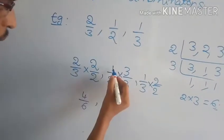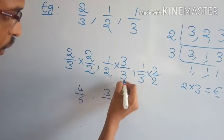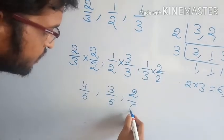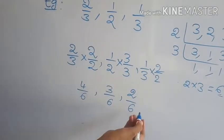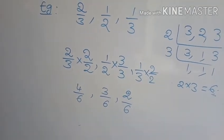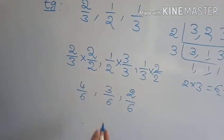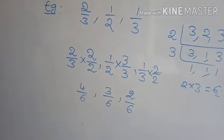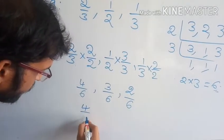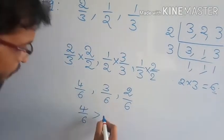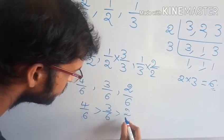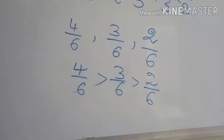Since all denominators are equal, apply Case 1 and compare numerators. Numerators are 4, 3, 2 — 4 is the greatest. So descending order is: 4 by 6, then 3 by 6, then 2 by 6. This is the descending order of the fractions.